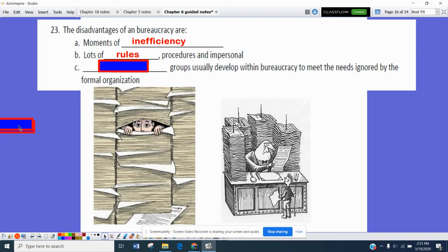There's also lots of rules and procedures and impersonal relationships. For example, in 2019, we had a series of floods in the Midwest. If you were a person who lost their home or lost some of your personal property as a result of flooding, you might have had to apply with FEMA, which is the Federal Emergency Management Administration or Agency. And it might take months to get money. You might not necessarily get the full amount of money for your damages, but you have to go through all these hurdles to get that taken care of. And finally, informal groups usually rise within bureaucracies to meet needs that are usually ignored by the formal organization.